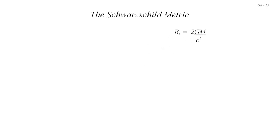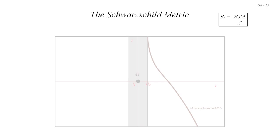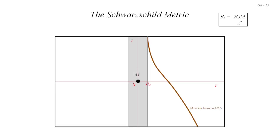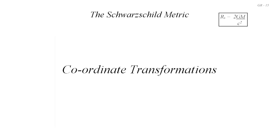When we discussed this earlier, we said that the strange velocity effects measured by the red at-rest observer at the Schwarzschild radius were only really due to what might be called a coordinate singularity. This was a consequence of using a particular measuring system or metric, and those effects could be removed by using a different set of coordinates — a different metric. The way in which changes in the coordinate system could be done had been discussed earlier when we first started thinking about special relativity.